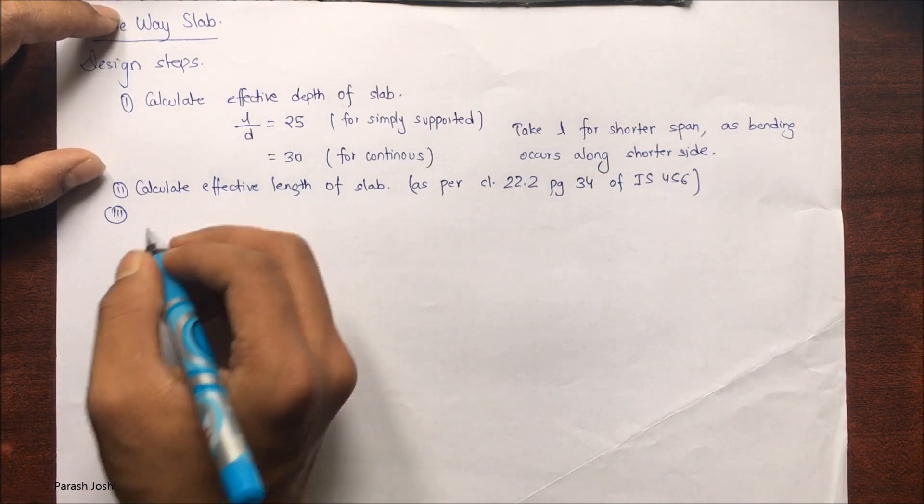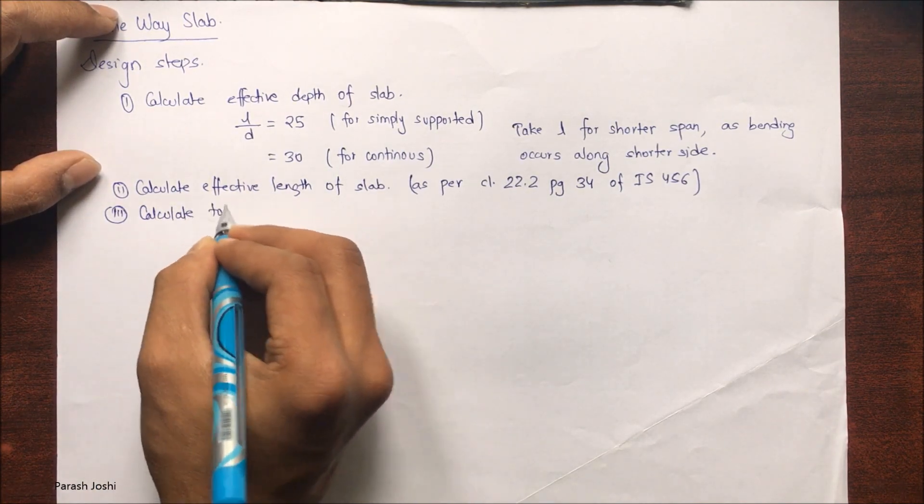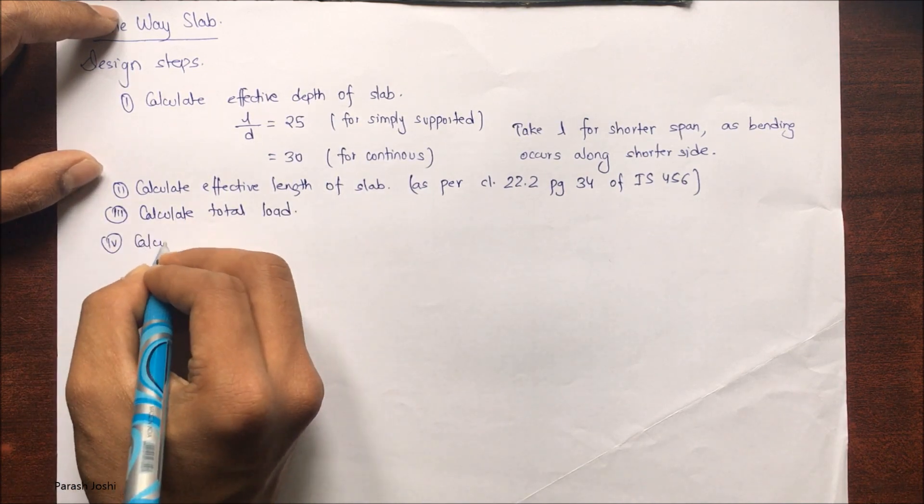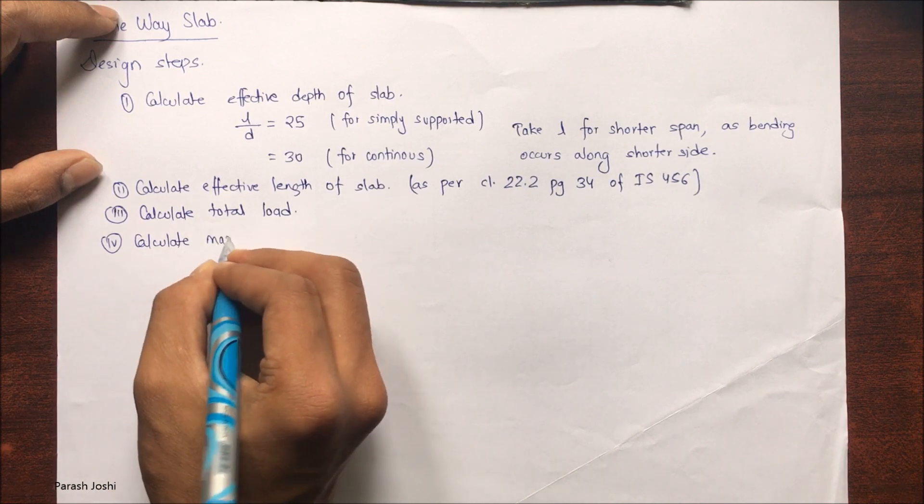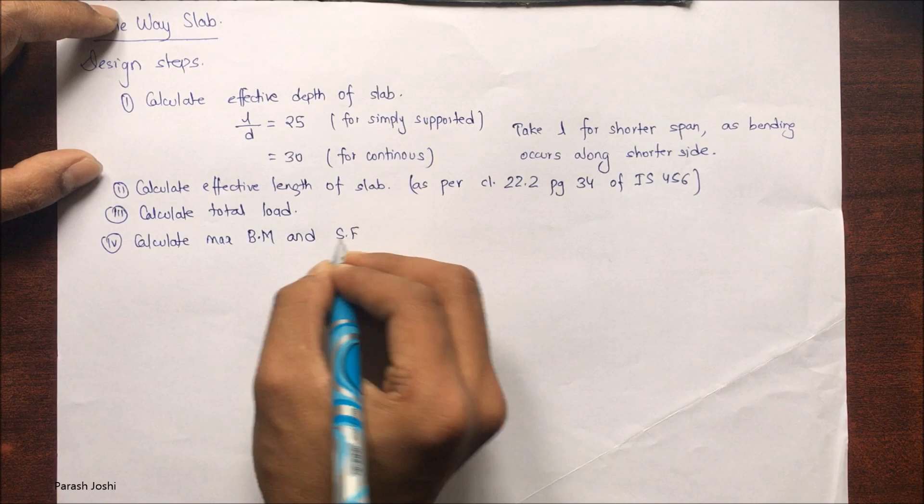Considering the shorter side and longer side. Step three is to calculate the total load acting on the slab, collection of all loads. Step four is to calculate the maximum bending moment considering the load and shear force acting on the slab.